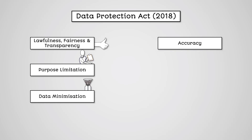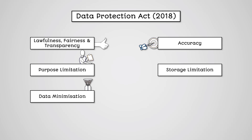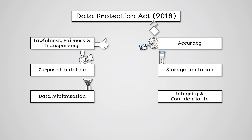The fourth principle is accuracy. You must ensure reasonable steps are taken to ensure accuracy, the source of the data is clear, and data should be updated if necessary. The fifth principle is storage limitation. You must review how long data must be kept for its purposes and securely delete data that is no longer needed or is out of date. The sixth principle is integrity and confidentiality. You must be clear on who is responsible for ensuring data security, ensure good security tools and techniques are implemented, and respond to breaches quickly.